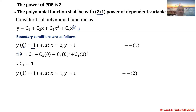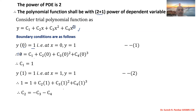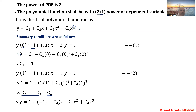The second boundary condition is y(1) = 1, so at x = 1, y = 1. Substituting: c1 + c2·1 + c3·1² + c4·1³ = 1, and since c1 = 1, we get c2 + c3 + c4 = 0, which gives c2 = -c3 - c4. Substituting c1 and c2 back into y: y = 1 + (-c3 - c4)·x + c3·x² + c4·x³.